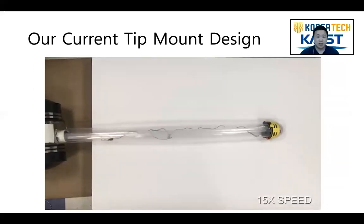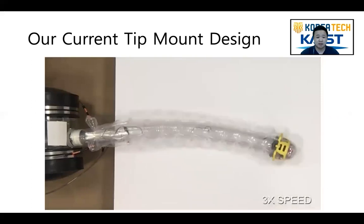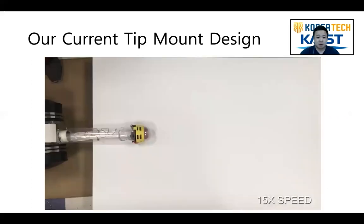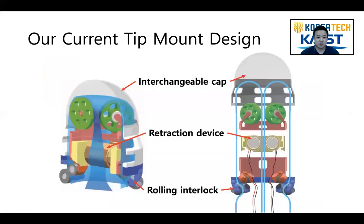We propose a new mechanism for the tip mount that overcomes the limitation of previous works described above. Our current tip mount is firmly attached to the tip of the soft growing robot when the robot grows, retracts, and steers. Our current tip mount consists of three main elements: an interchangeable cap, a retraction device, and a rolling interlock.